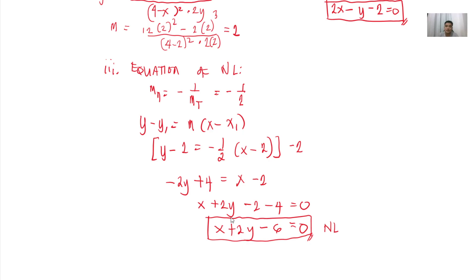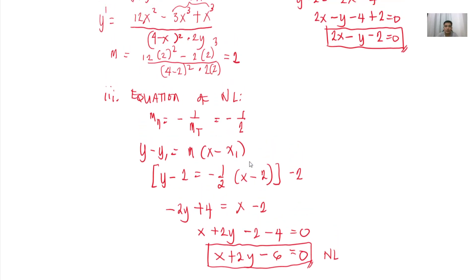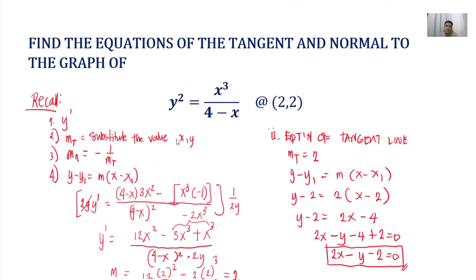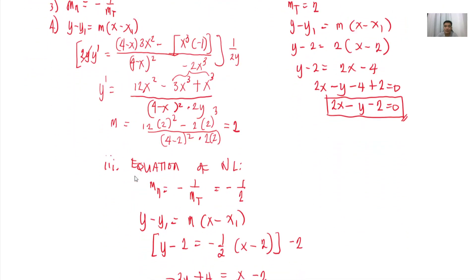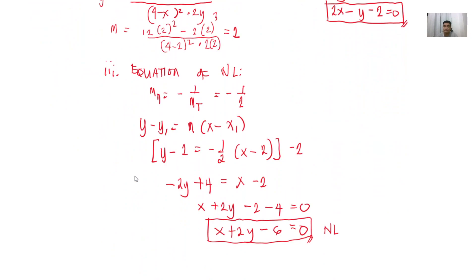So that's it — quite straightforward. You just need to get y prime first, then substitute the value of your x and y to get the slope of the tangent line. Know that the slope of the normal line is equal to the negative reciprocal of the slope of the tangent. Then use the equation of the straight line y minus y sub 1 equals m times x minus x sub 1, and from there you get your equations. I hope you learned something from this video.